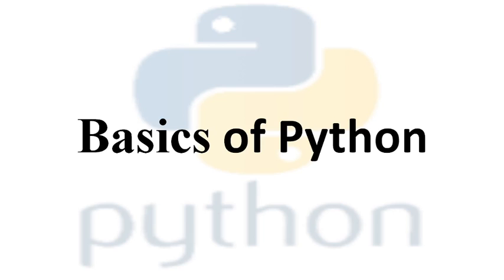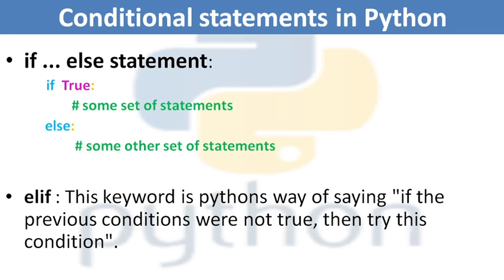Very often in programming languages, we have to execute different sets of statements based on some condition. We can achieve this using conditional statements — that is, if, elif, or else statements. The basic syntax of the if-else statement is: if the condition returns true, then some set of statements will be executed within this if block. If it returns false, then it will come to the else part and some other set of statements will be executed.